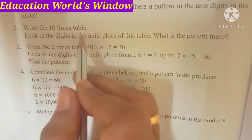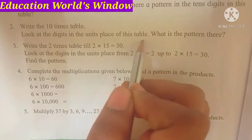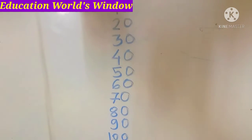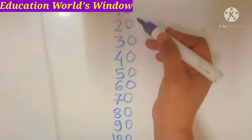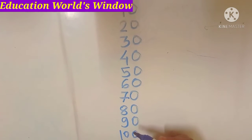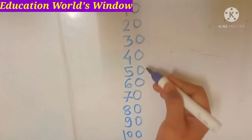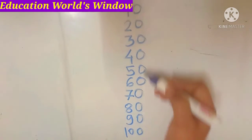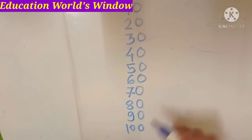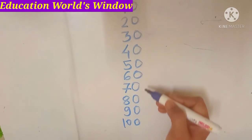Write the ten times table. Look at the digits in the units place of this table — what is the pattern there? We have taken a table of 10. What is the pattern in this unit place? The pattern is 0, 0, 0, 0, 0 — all zeros in the units place.